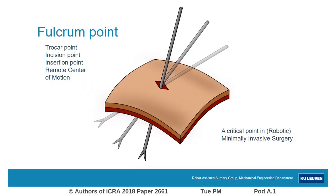The fulcrum point. It is a point that goes by many names, such as trocar point, incision point, insertion point, or remote center of motion. However you call it, it is a critical point in robotic minimally invasive surgery.